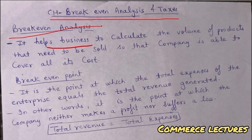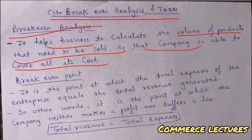This helps us understand how we need to make our sales so that all our expenses are covered — so that after selling our products we have enough money. Moving ahead to Break-Even Point — Break-Even Point is the point at which the total expenses of the enterprise are equal to the total revenue.